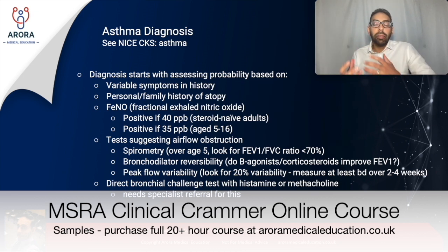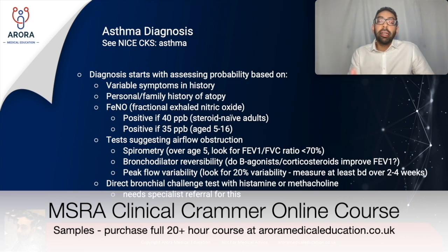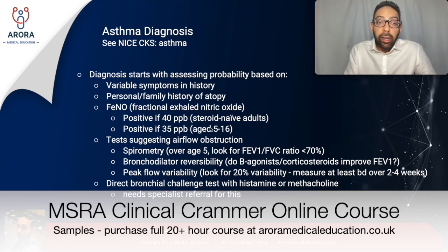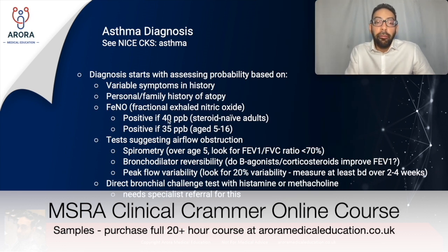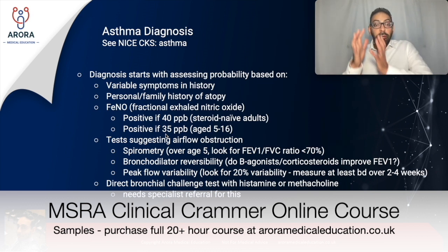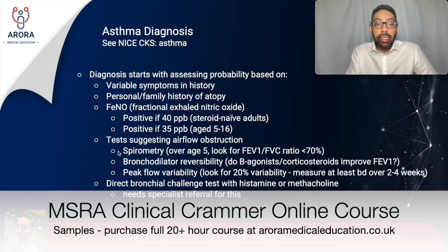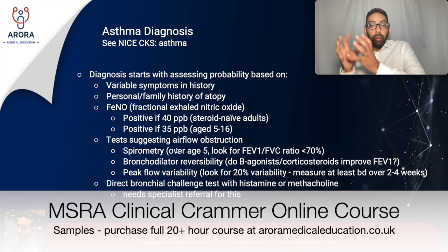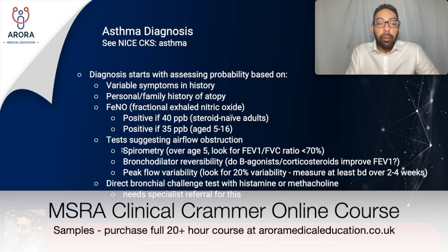Variable symptoms in history: does it sound like asthma with diurnal variation and classic features? Personal or family history of atopy includes allergic rhinitis, eczema, and allergy. For FeNO — fractional exhaled nitric oxide — remember it's positive at 40 parts per billion or more in a steroid-naive adult. In children aged 5 to 16, a FeNO result is positive at 35 parts per billion or more. Note that FeNO is a separate test from the airflow obstruction tests.